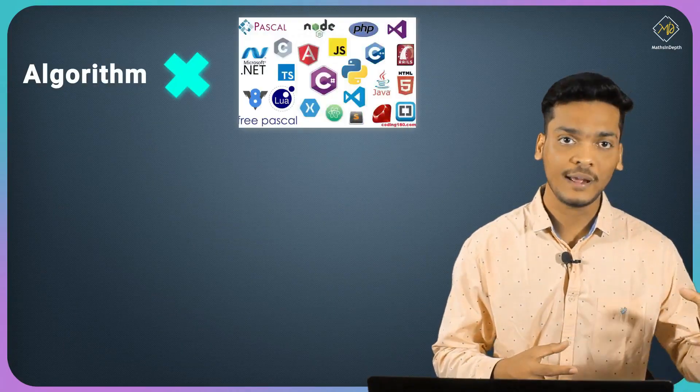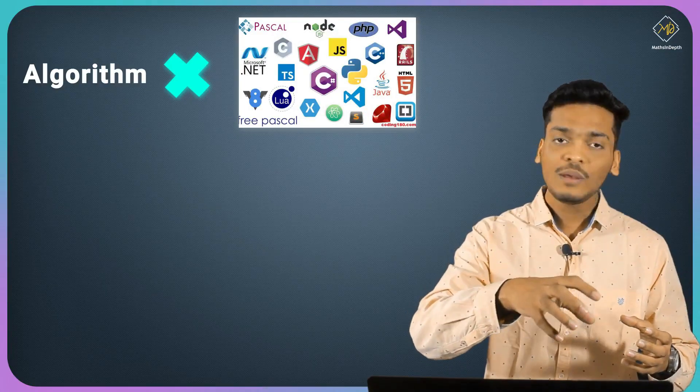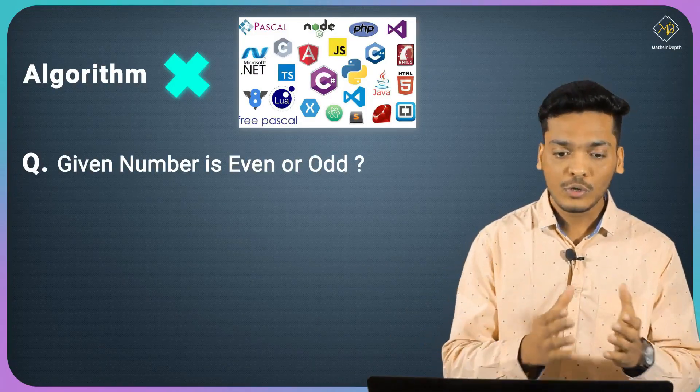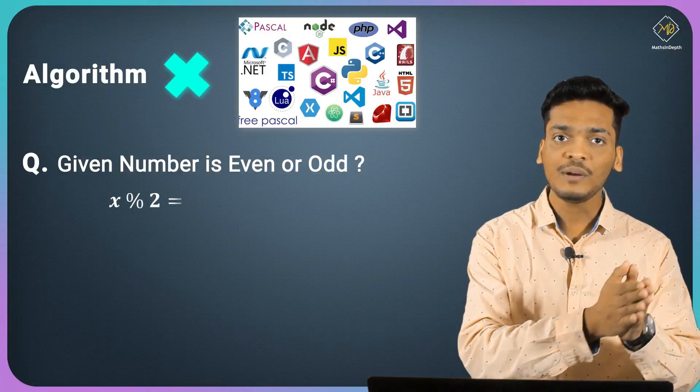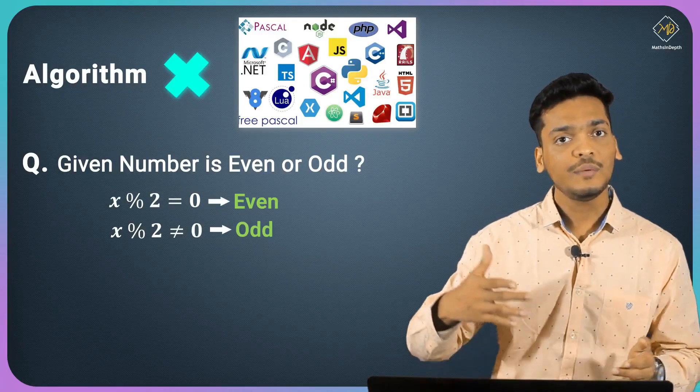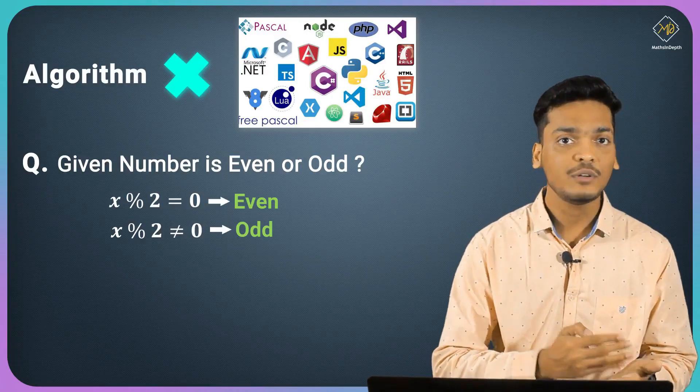The important thing is that algorithm is independent of programming language - it's all about logic. For example, if I ask you how to check if a number is even or odd, the logic would be: if a number is divisible by two then it is even, if not divisible by two then it is odd. Now this logic you can write in any language - either Java, C, Python, or whatever language you know.